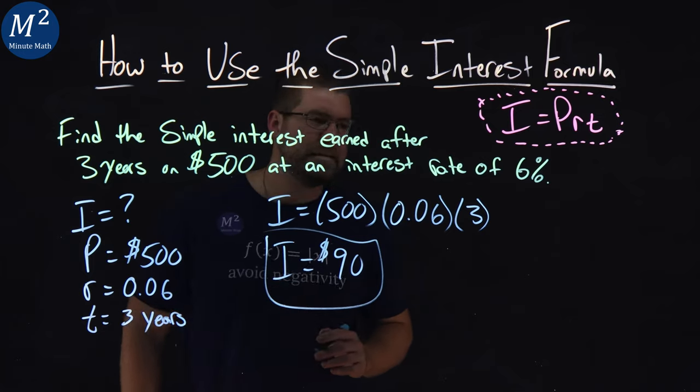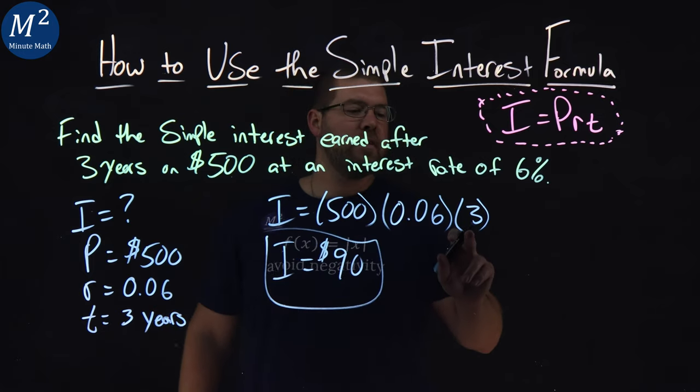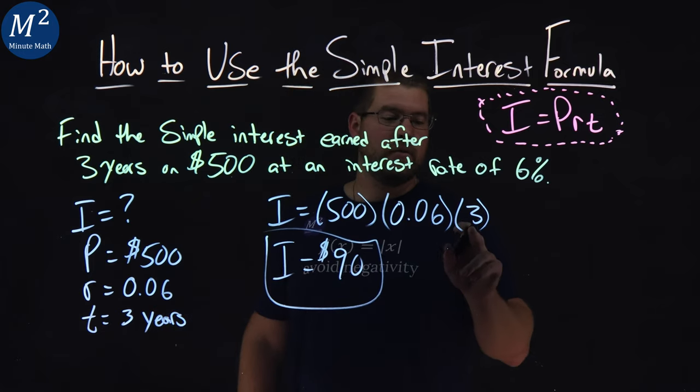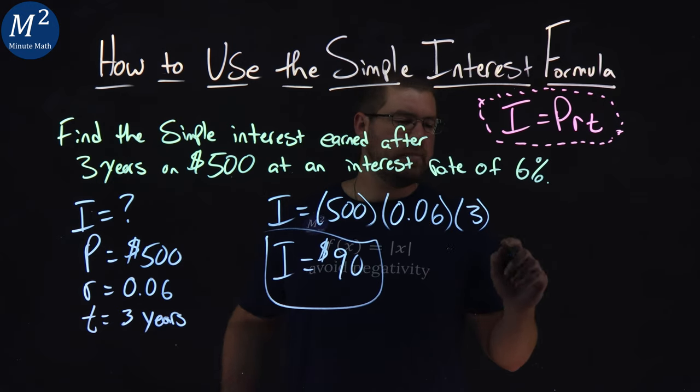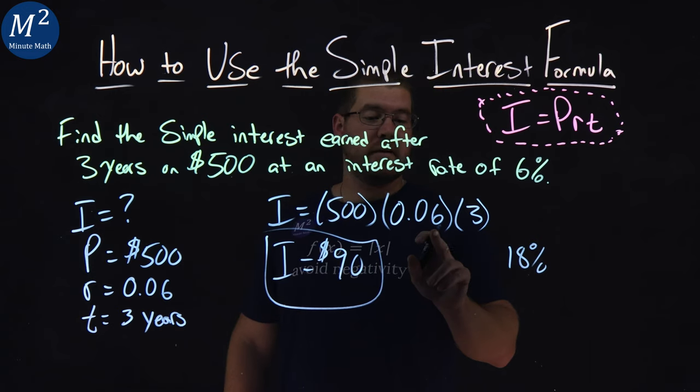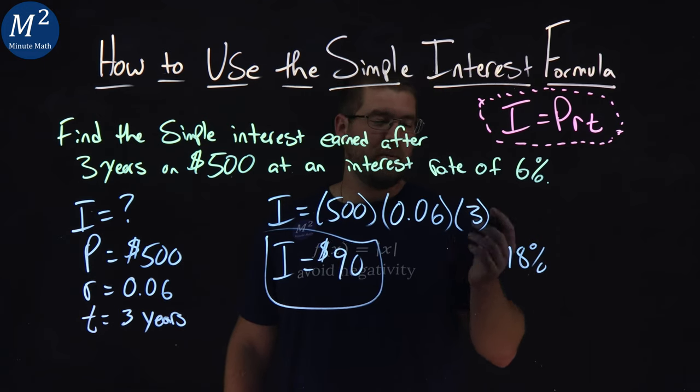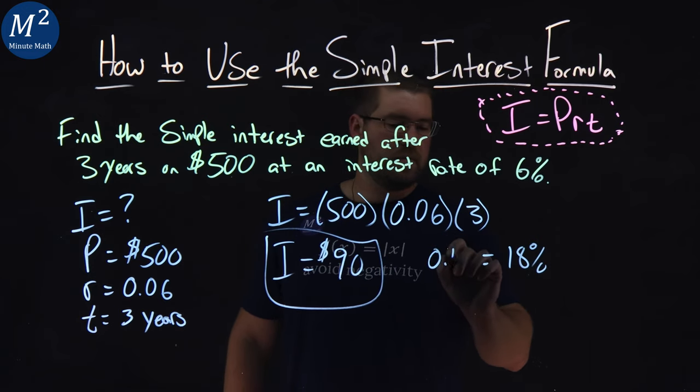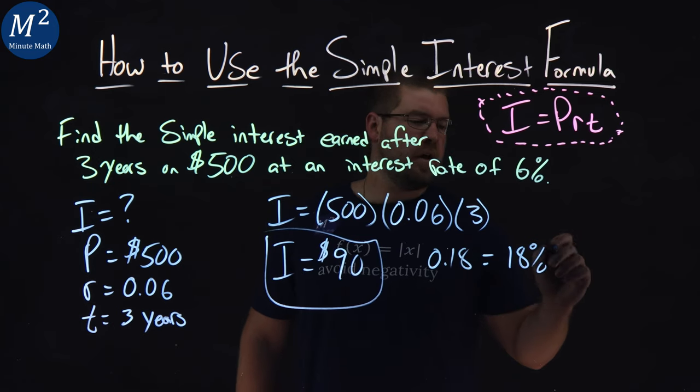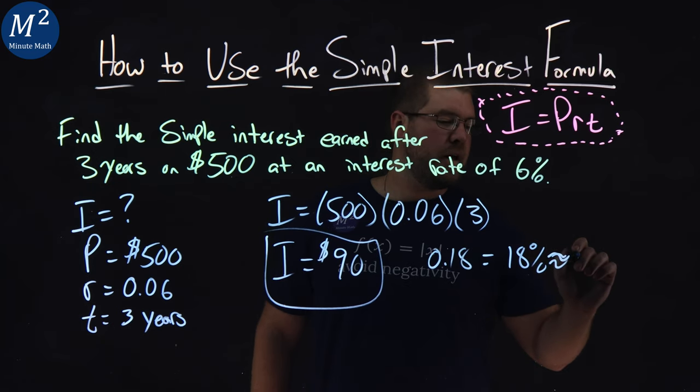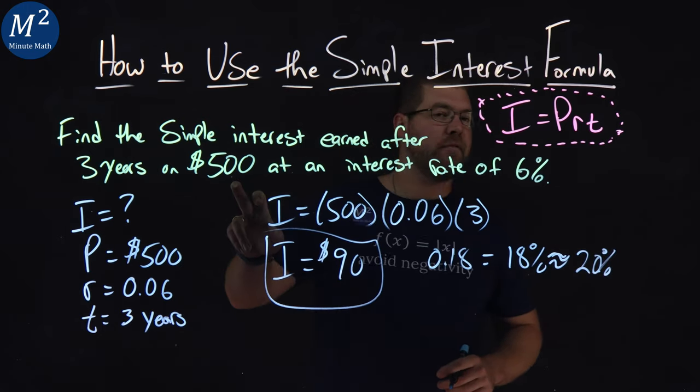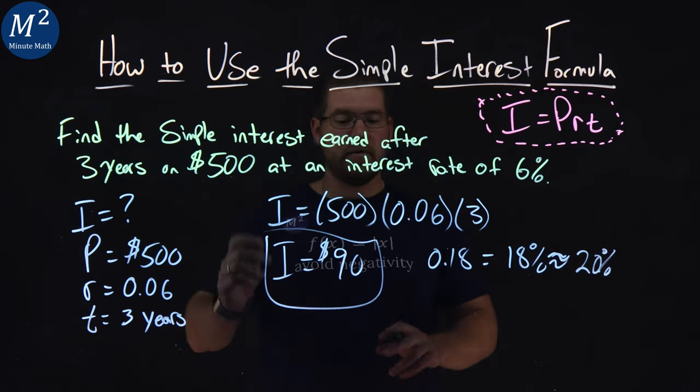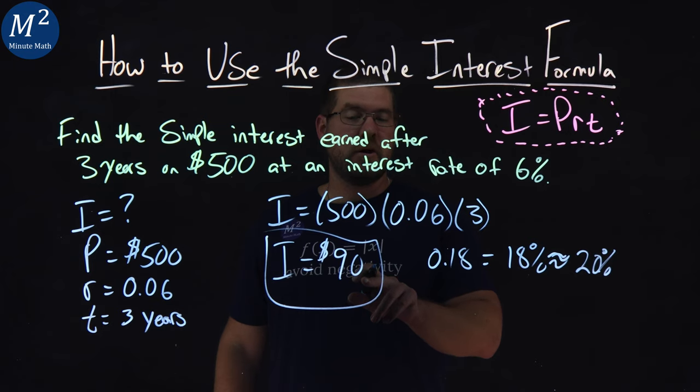Does that answer make sense? Well, if we have 3 years at 6%, that comes out to be 18% total, right? Multiplying that out, three times 0.06 is 0.18, or 18%. That's approximately, if I can write that, a 20%.